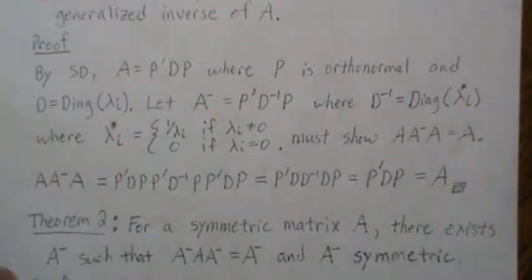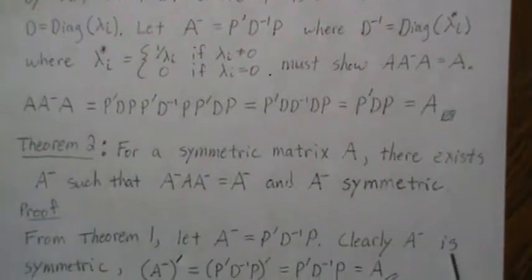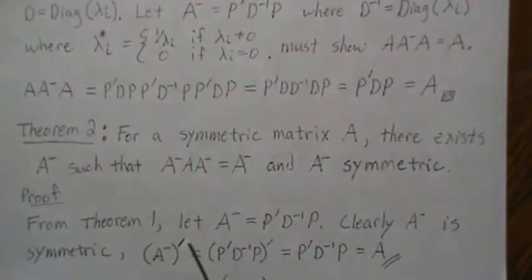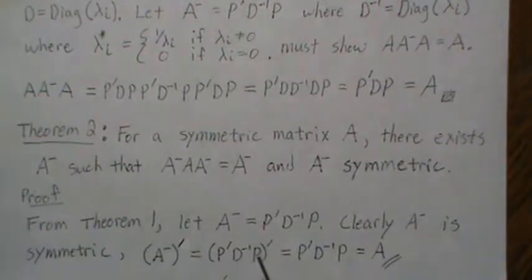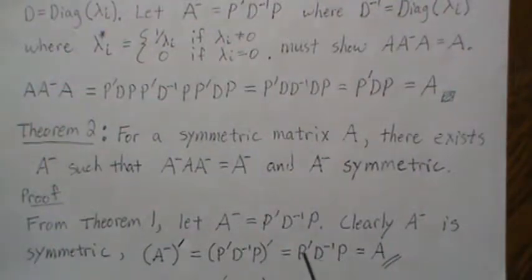From Theorem 1 we let the generalized inverse be A-dash = P' D-inverse P. Clearly A-dash is symmetric: taking the transpose of A-dash, we distribute the transpose — P becomes P-transpose, D-inverse is diagonal so it's symmetric, and P' becomes P. This is exactly what we were calling A-dash, so the matrix equals its own transpose and is therefore symmetric.